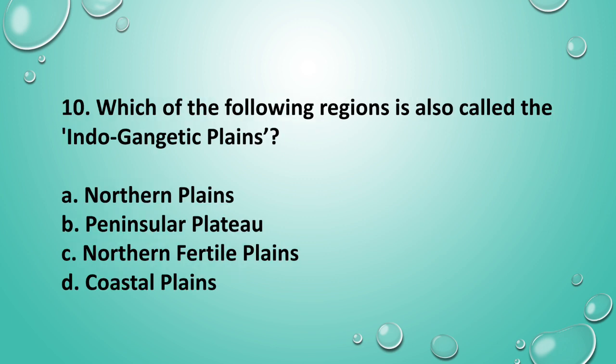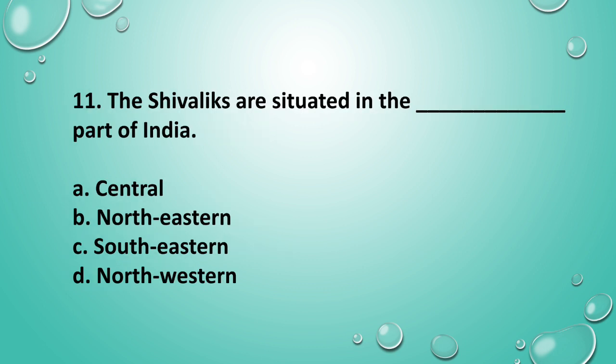Question 10: Which of the following regions is also called the Indo-Gangetic Plains? The answer is option C, Northern Fertile Plains. Question 11: The Shivaliks are situated in which part of India?